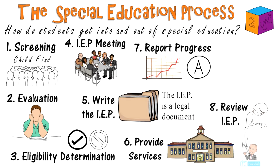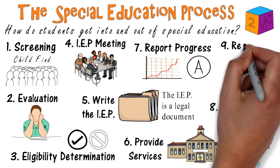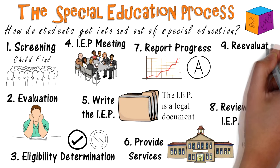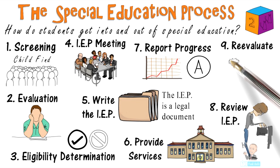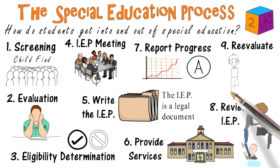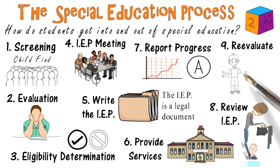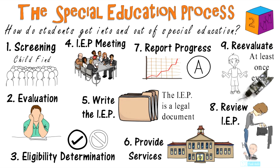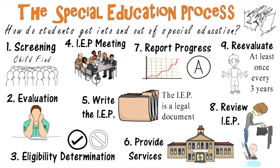The parents also have the right to fight the educational placement of the child. Lastly, re-evaluation of the IEP: the child must be re-evaluated for special education at least once every three years. The results of testing will determine if the child continues to receive special education services. It is at this step that many students exit special education.